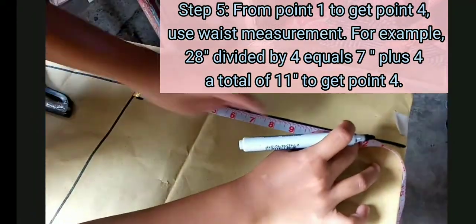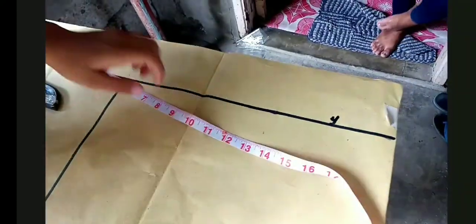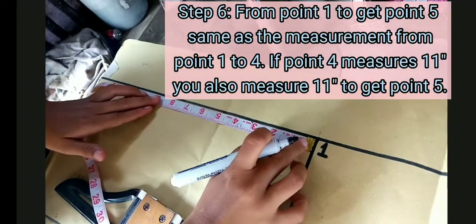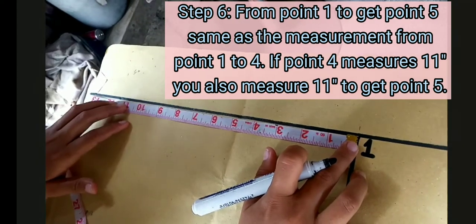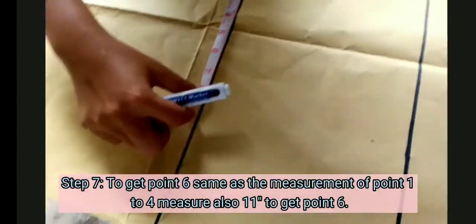To get point 4, use the waist measurement. The measurement is 28 divided by 4 is 7 plus 4 equals 11. You can also use that measurement to get point 5.